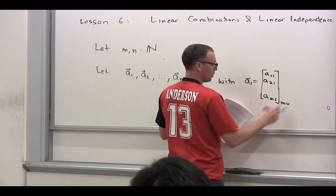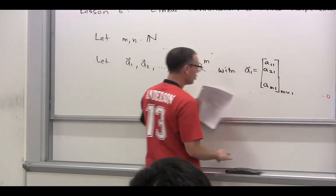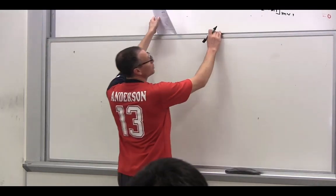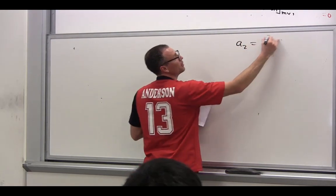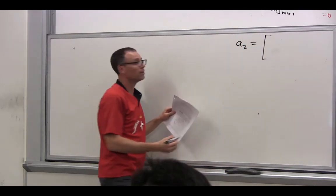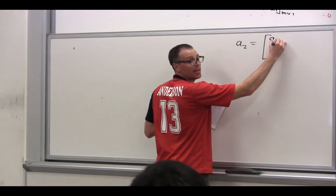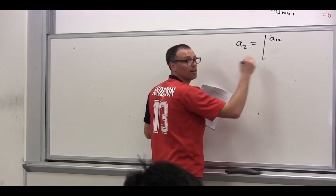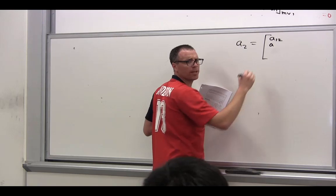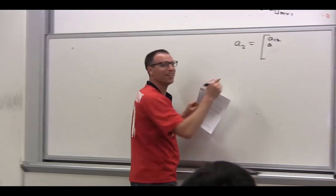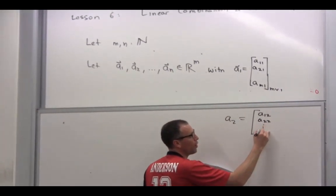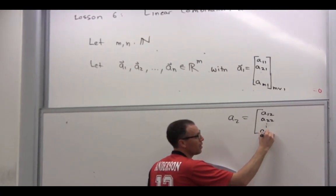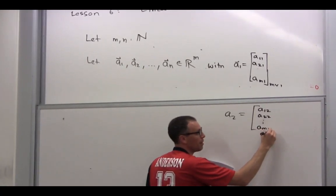Let's talk about the next one. Let's talk about A2. What's A2 look like? A_12. Because it's the second column, right? What's that? Matrix multiplication? No, no, no. Let's not get there yet. What's the second one? 2,2. All the way down to... How many rows? M,2.